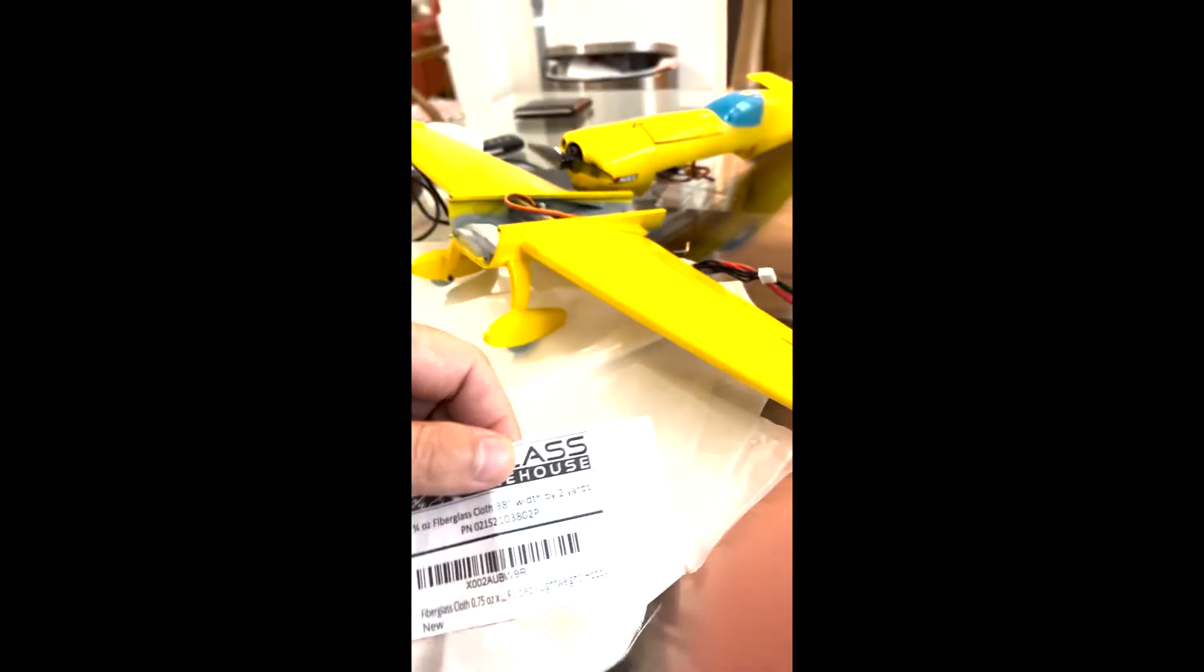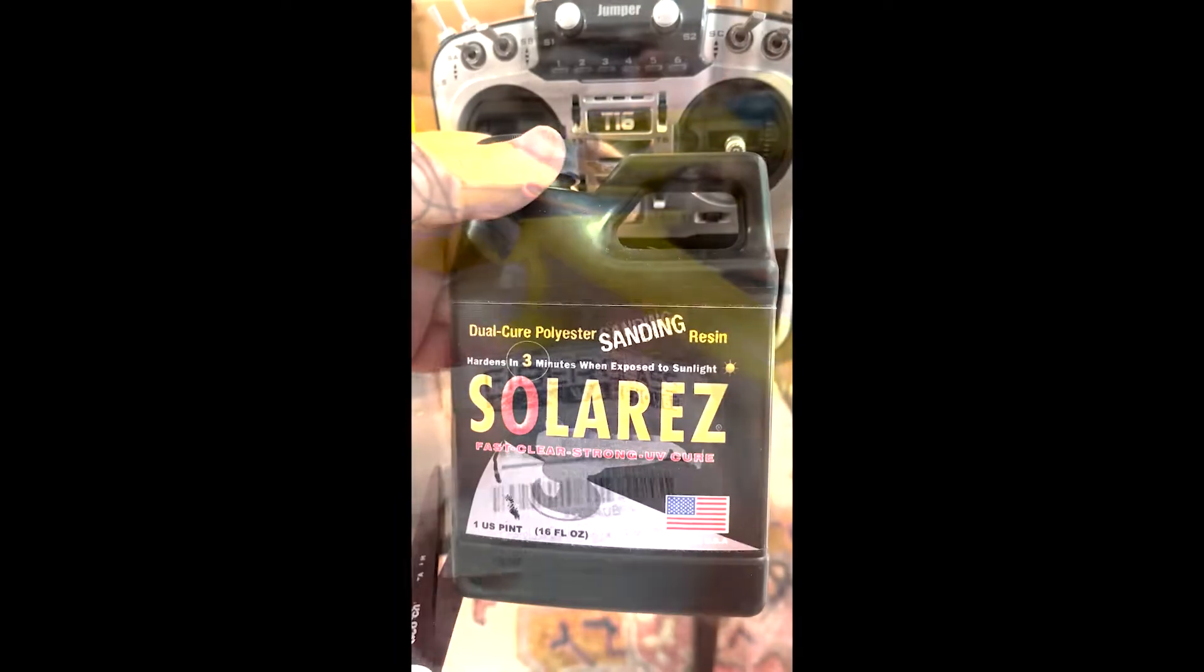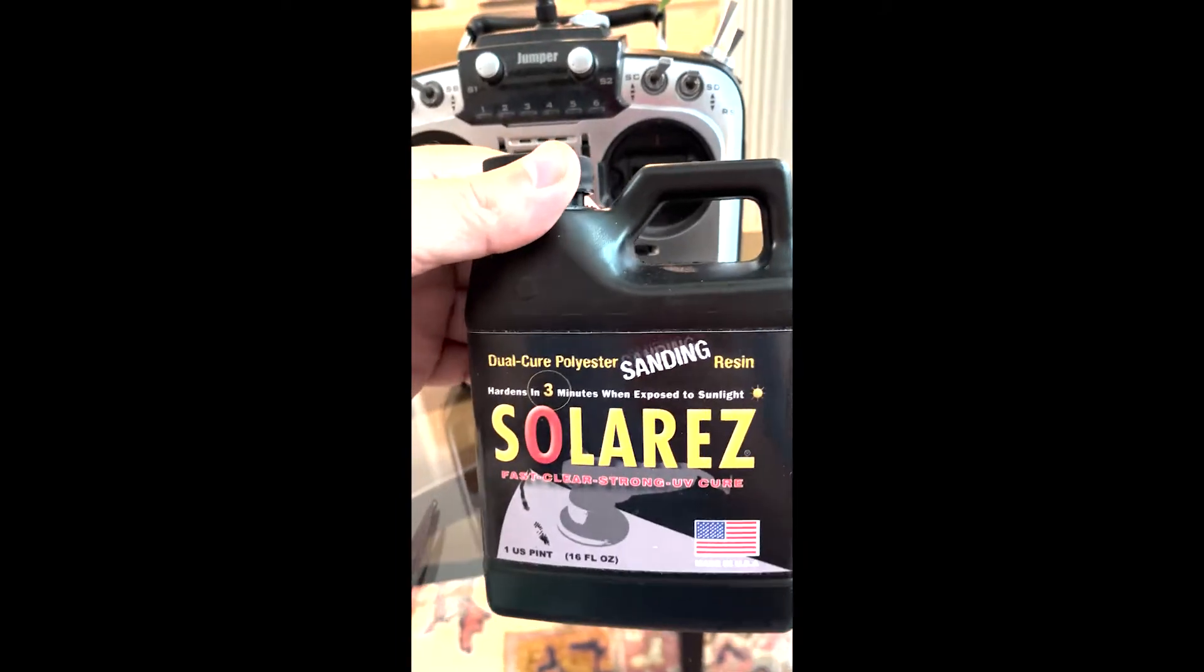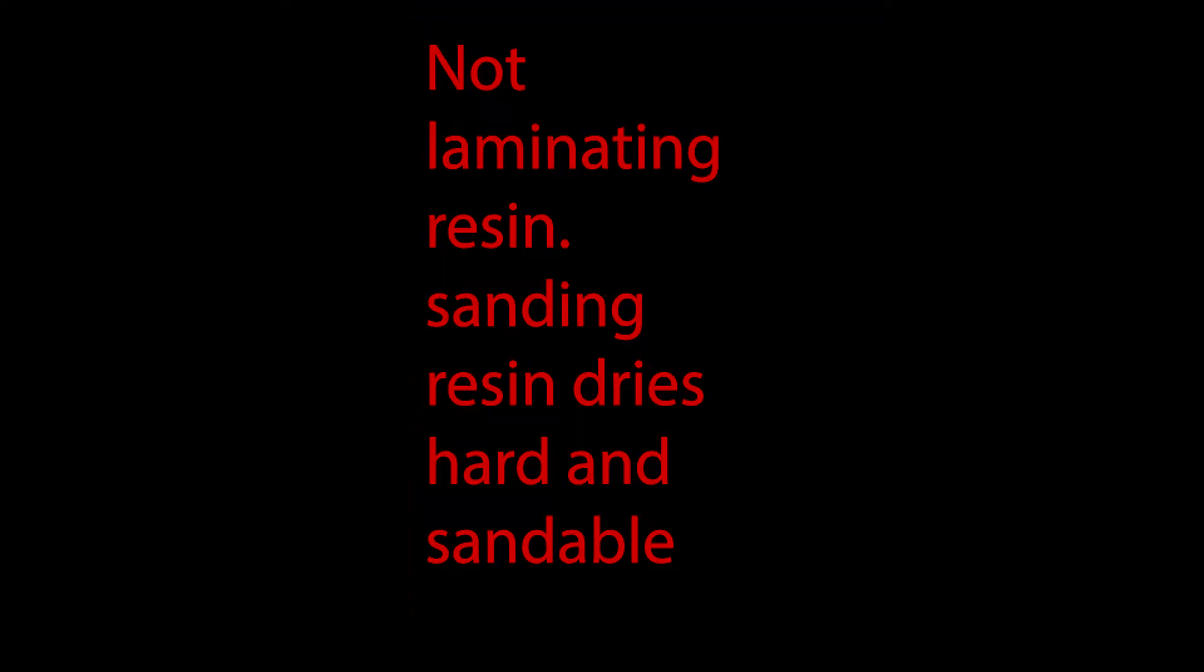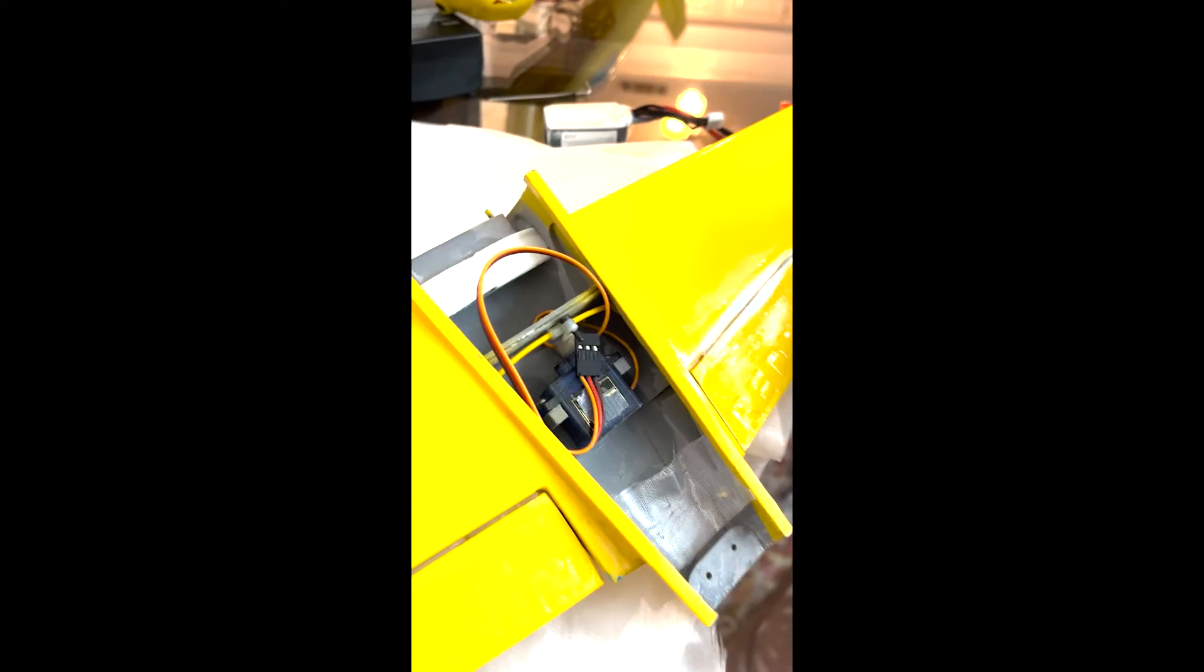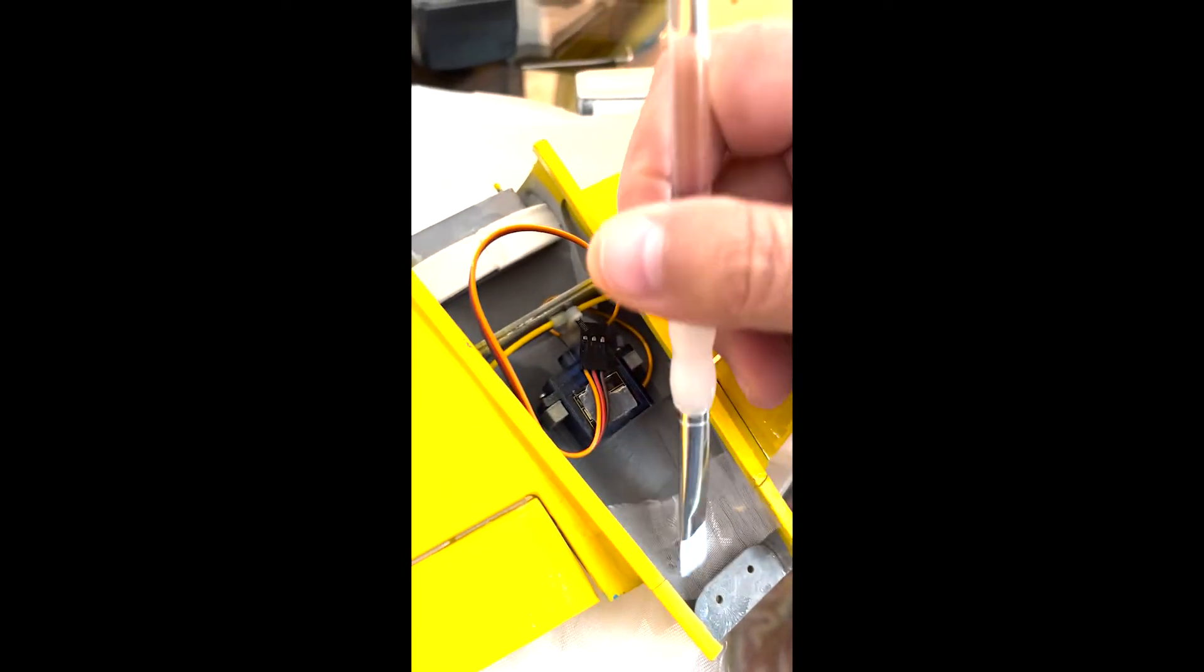Fix it with ultra-thin fiberglass cloth—it's three-quarter ounce cloth—and Solar Res sanding resin. Note: sanding resin, that's specific. Here we're dry fitting a piece of cloth into the repair, and we're simply going to add some of the resin, just a small amount, and then start stippling it into the fabric.